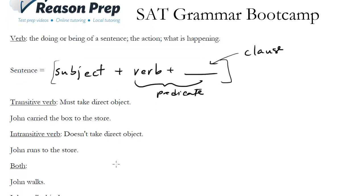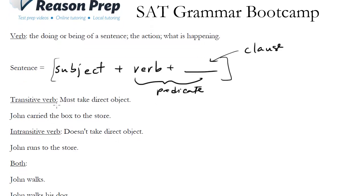There are two main kinds of verbs we're going to look at now. We've got the transitive verb, and a transitive verb must take a direct object. So for instance, John carried the box to the store. John is our subject, carried is our verb, the box again is our direct object. You really can't use the verb carried without an object, it just doesn't make sense. John carried what, right?